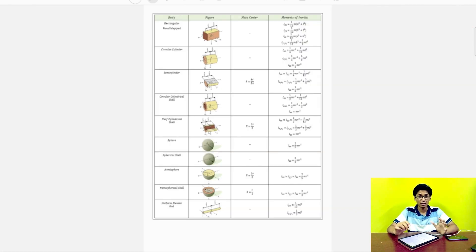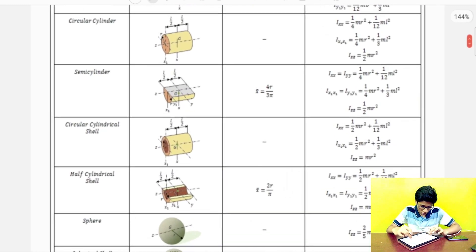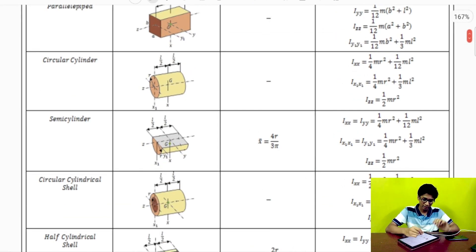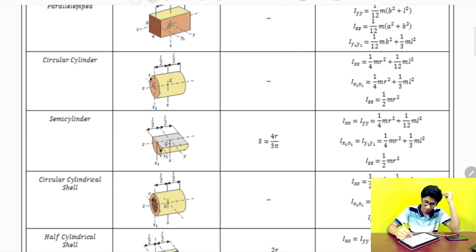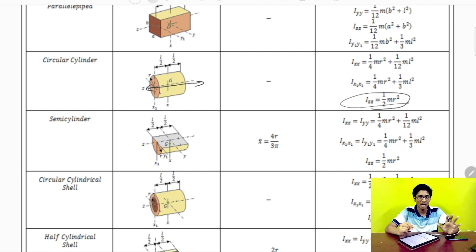In the chapter of rotational mechanics, it is very important that you know the moment of inertia of bodies by heart. For example, for a circular cylinder, the z-axis has a moment of inertia of half mr². The disc also has half mr². It's very possible you forget some values, so I'll show tips and tricks to remember them.